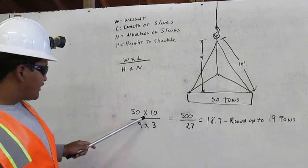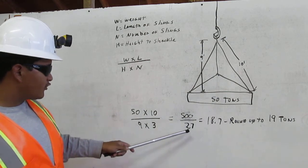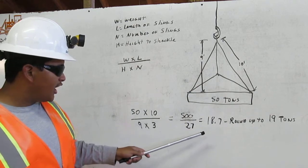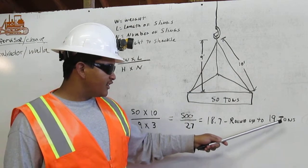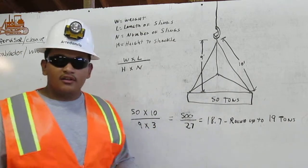And then 50 times 10 equals 500. 9 times 3 equals 27. That equals 18.7, rounded up to 19 tons. Each sling is carrying up to 19 tons. Thank you.